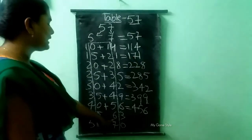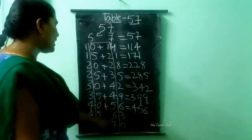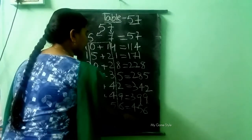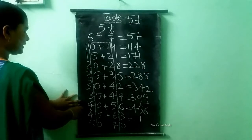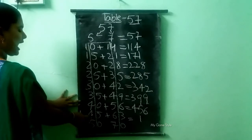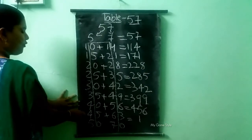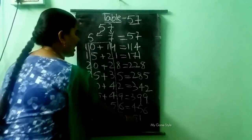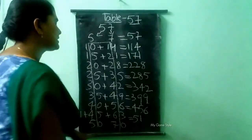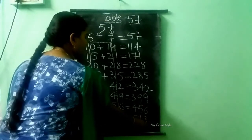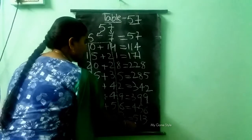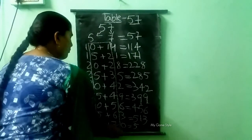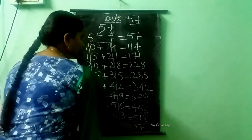Then we need to add these both numbers: 5 plus 6 — how much, children? 11. So I am writing 1 in the middle and 1 in another place. Then we are adding: 4 plus 1 — how much, children? 5. So I am writing 5 here. Then here 3 is there, so we need to write 3 as it is. Then here also it is 5, so we need to write 5. Here 0 plus 7 — how much, children? 7. Here it is 0.